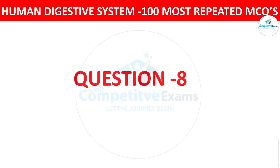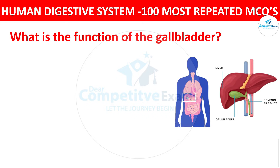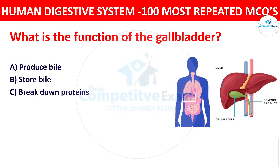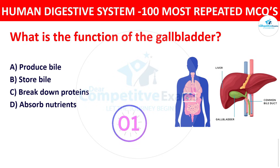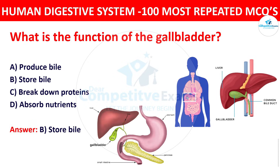Question number eight: What is the function of the gallbladder? Your options are produce bile, store bile, breakdown proteins, or absorb nutrients. The correct answer is store bile. The gallbladder stores bile produced by the liver and releases it into the small intestine to aid in fat digestion.